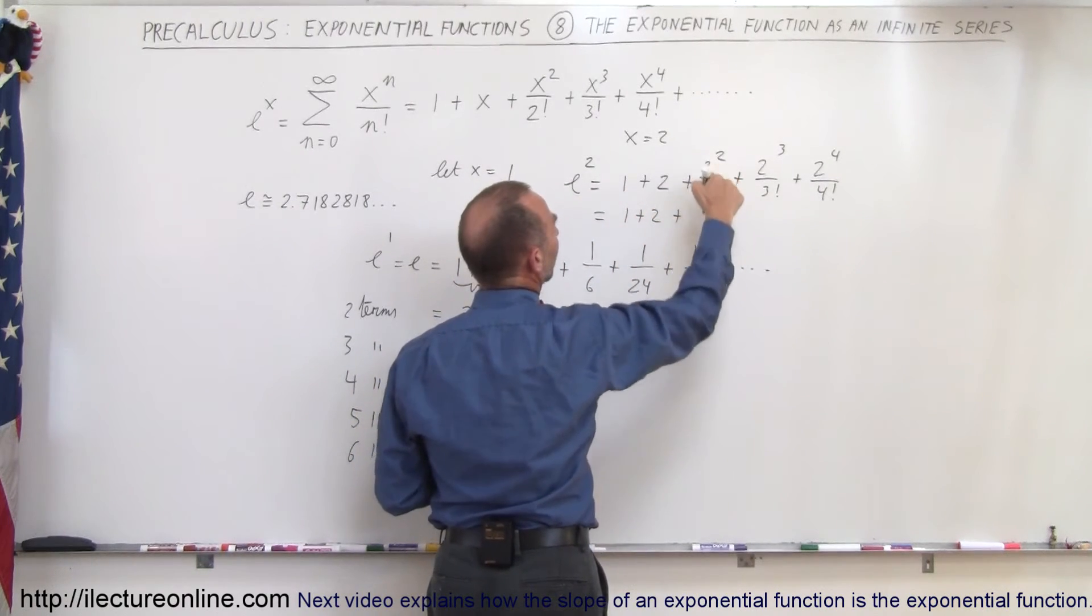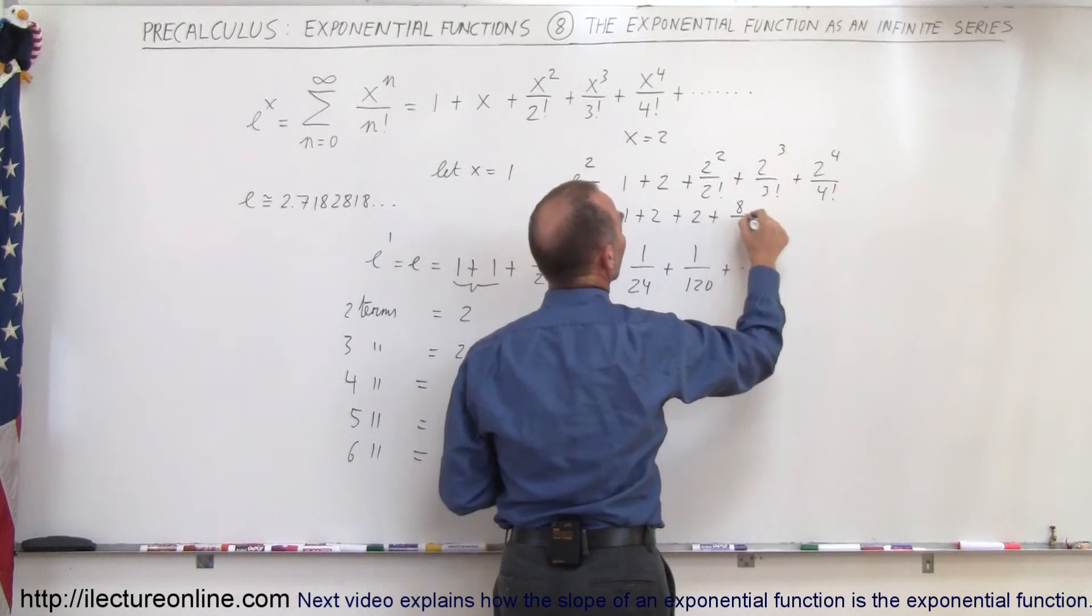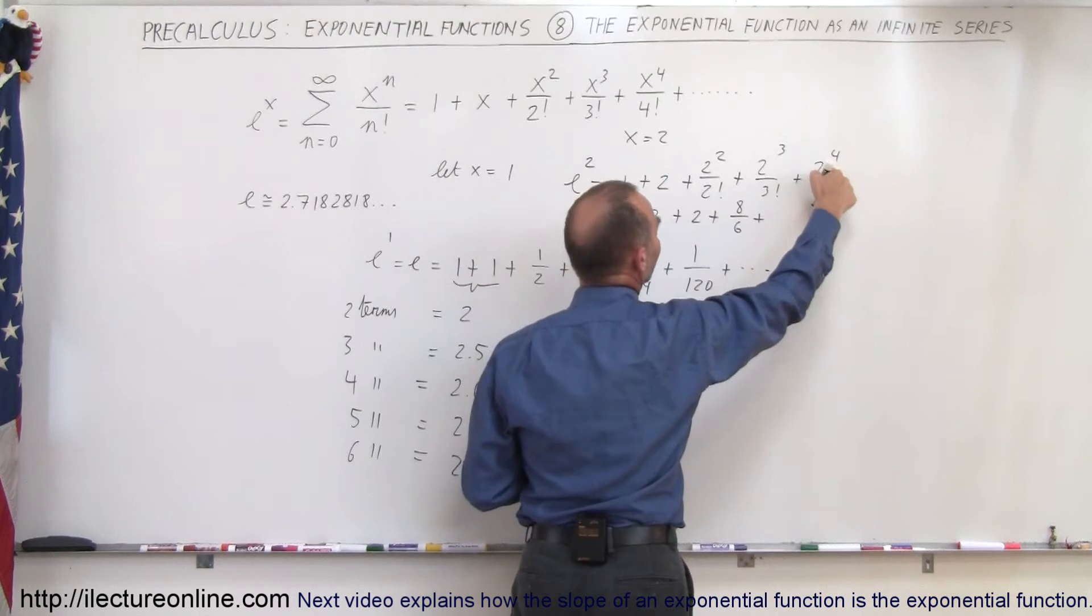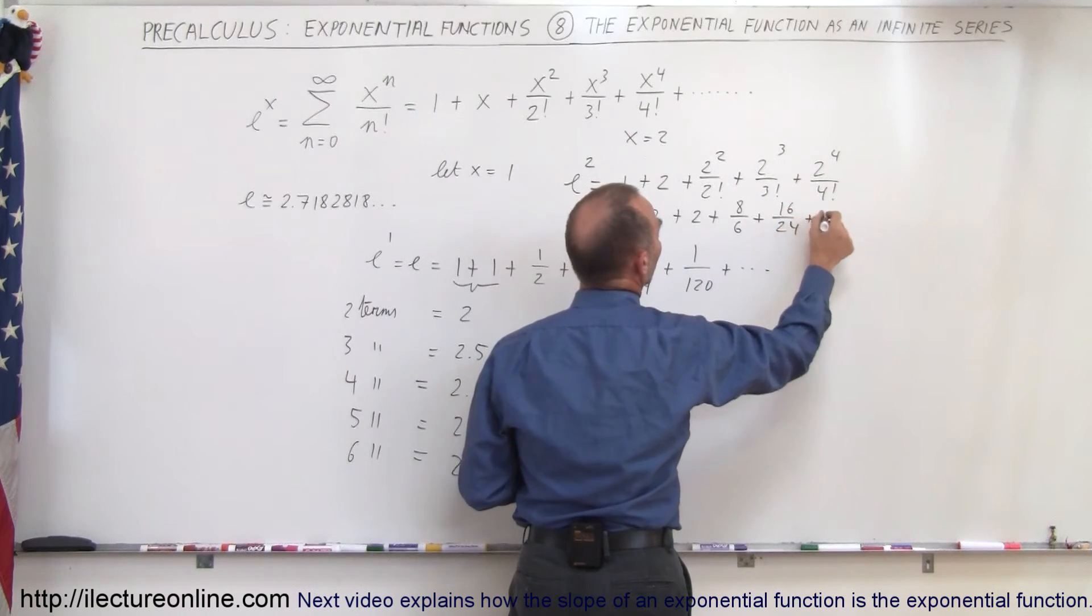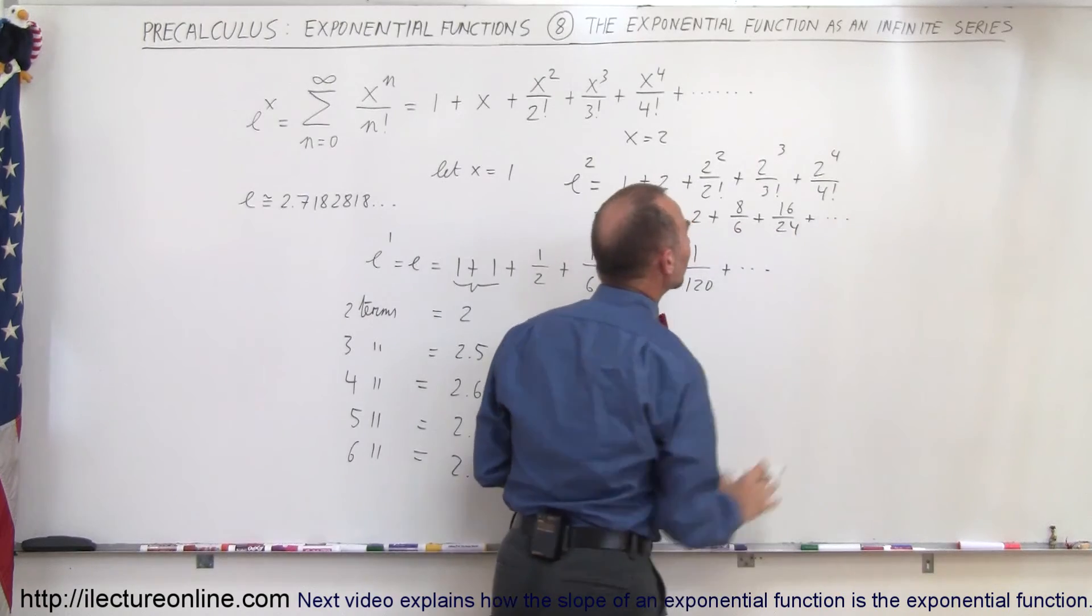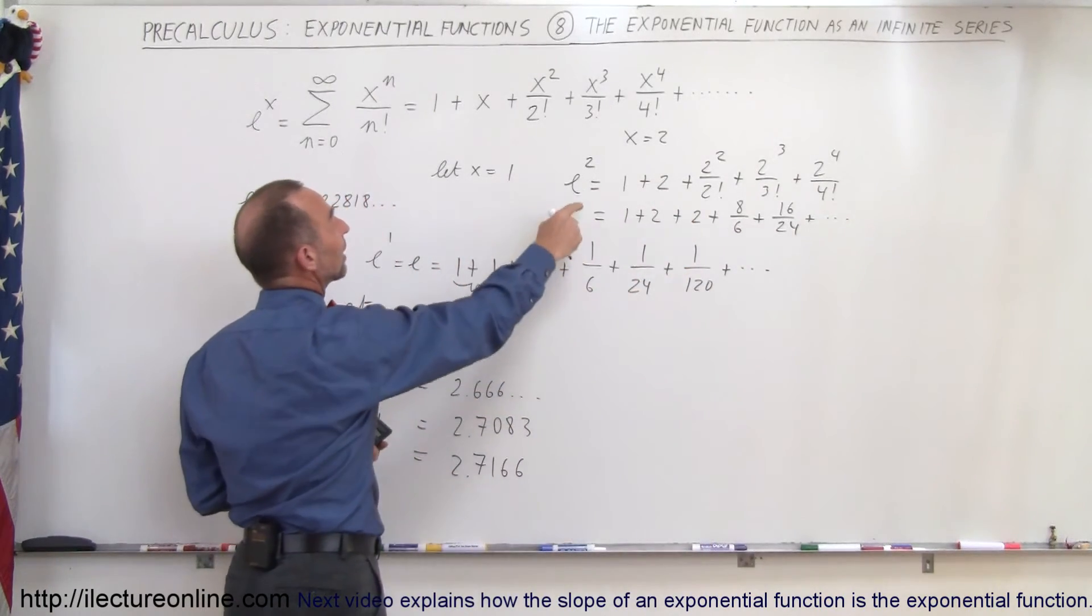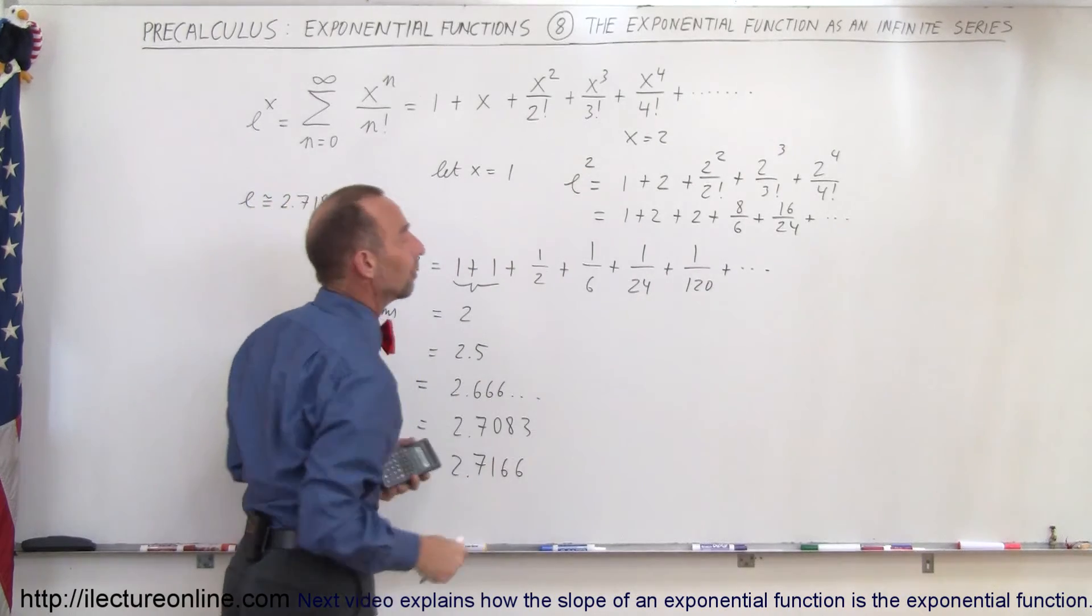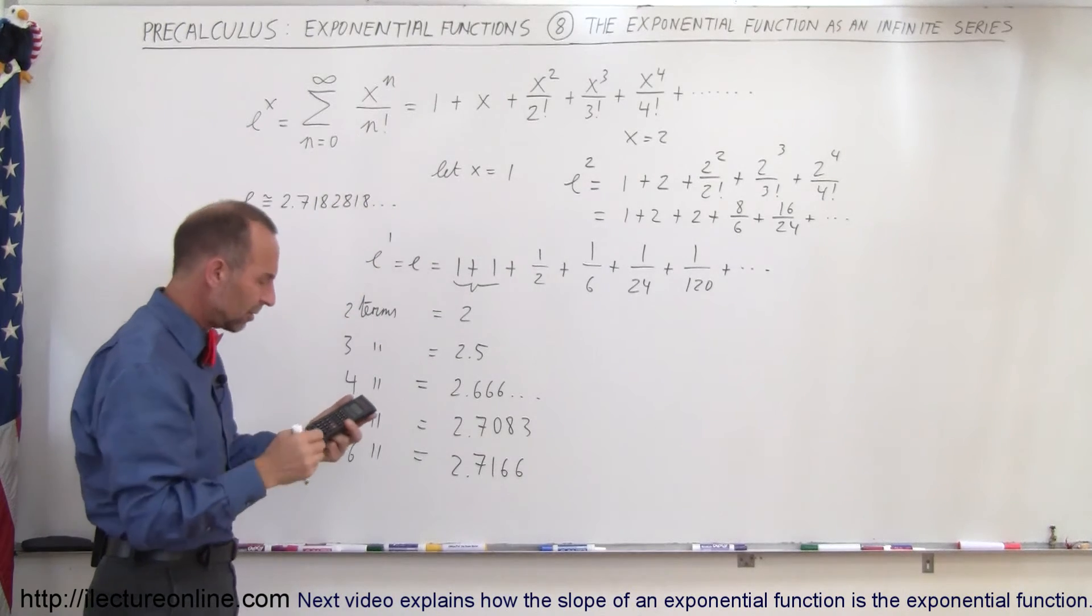This would be equal to 1 plus 2, plus 4 divided by 2, which is 2, plus 8 divided by 6, plus 16 divided by 24, and so forth. If you keep adding that, you find that eventually, when you go far enough on this series, you'll get the value for e to the second power. What would e to the second power be? Well, we take this number squared and see what we get.